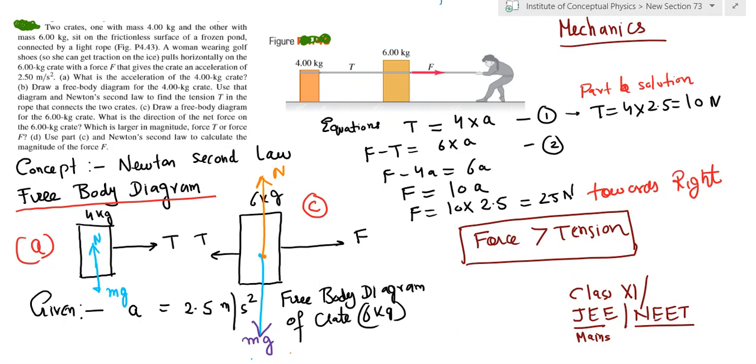If you start drawing the free body diagrams, you can see the 4 kg mass is having a tension T on the right hand side. The 4 kg mass has a weight downwards which is being balanced by the normal reaction, and hence there is no vertical motion of the 4 kg block.